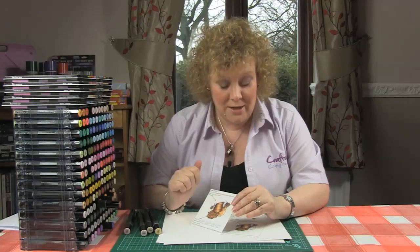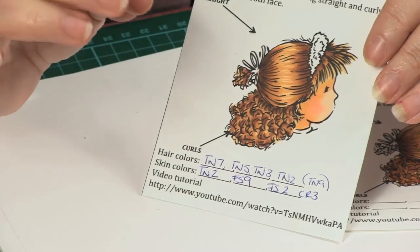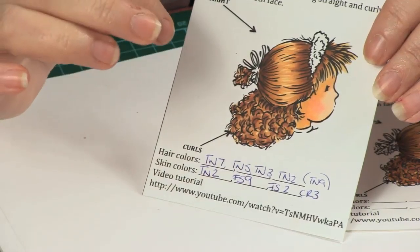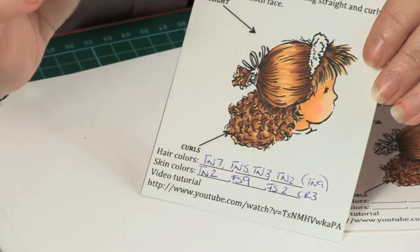The pens I'm using for this demonstration are TN2, FS9, FS2, and CR3—the tans, the flesh tones, and the coral tones.